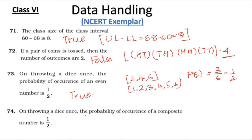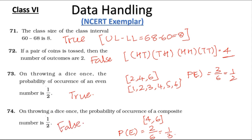Question 74: On throwing a dice once, the probability of occurrence of a composite number is 1 by 2. Composite numbers are numbers having more than two factors; here 4 and 6 are composite numbers. So the probability is 2 out of 6, which is 1 by 3. They have given 1 by 2, so the statement is false.